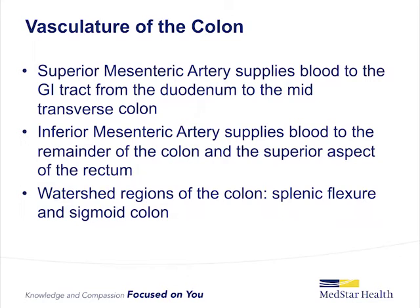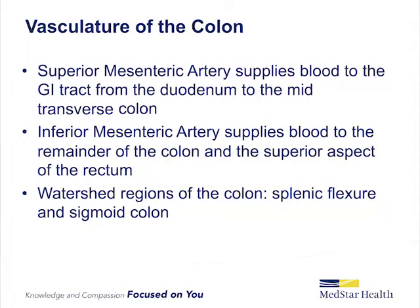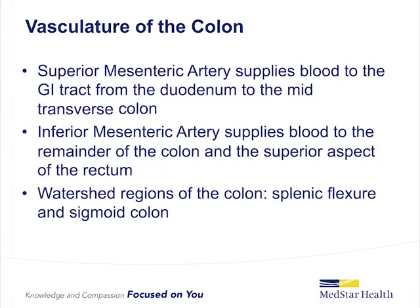There is collateral flow through the mesenteric branches from the marginal artery of Drummond and the meandering mesenteric artery, also known as the arc of Riolan. The marginal artery runs parallel to the colon so that it can provide branches of the vasa recta. The marginal artery also runs along the splenic flexure, however it is underdeveloped or absent in 5% of the population. Ischemic colitis often occurs after an injury to the watershed region of the colon, which are the splenic flexure and sigmoid colon.